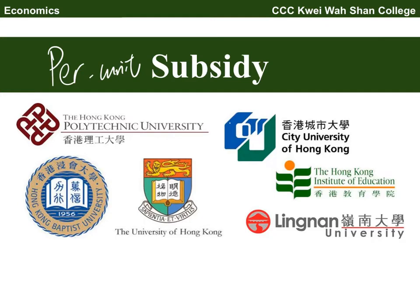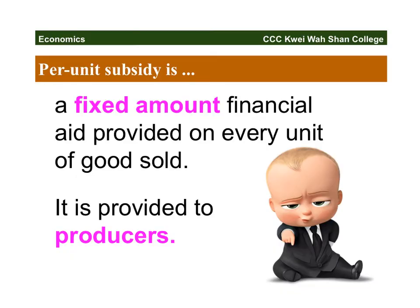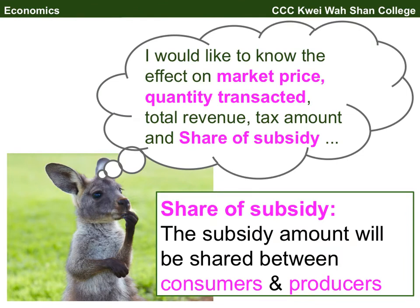Today we are going to talk about subsidies — the opposite of the per unit tax. A subsidy is not collected by the government but is an amount provided to producers. The producer will receive this amount when selling each unit of goods. The purpose is obvious: the government wants the market so that people can afford to buy the goods.